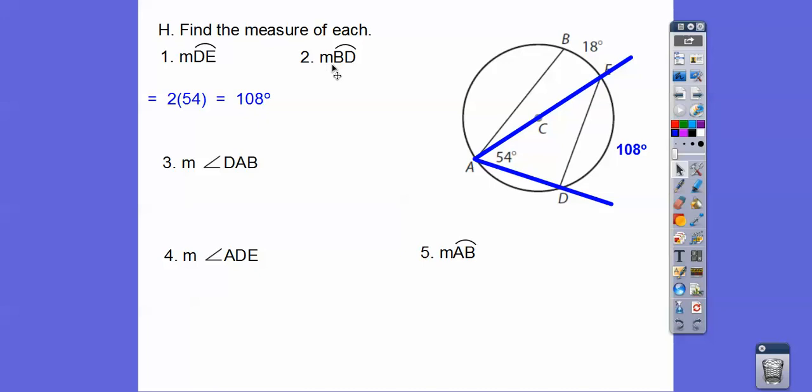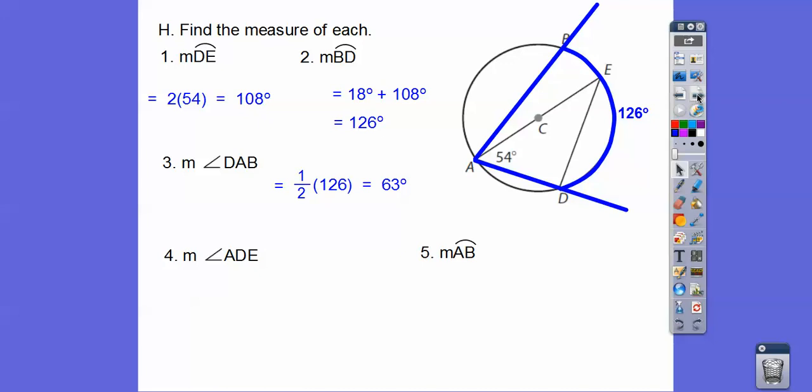The measure of arc BD. Where's BD? So here's BD. It's less than 180, so I can say BD. I'm going to add the arc addition postulate. It says this arc plus this arc. So it's going to be 18 plus 108, which is 126. The measure of angle DAB. So DAB. Well, if this whole arc is 126, then this inscribed angle is half of that. One of my students said, remember if this was 18, this would be 9. So 54 plus 9. The angle addition postulate from a while ago is also 63.